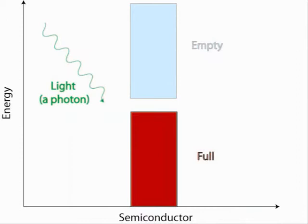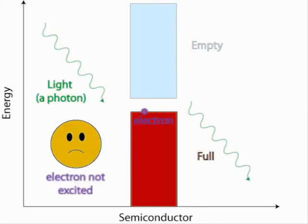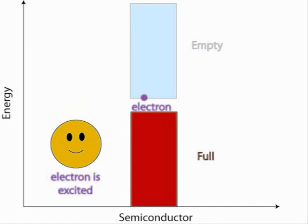For my research, I shine light onto my semiconductor. You can see the photon here. This light interacts with an electron and excites this electron to a higher energy. If the light does not have enough energy, then the electron does not become excited and therefore the light passes through my sample. Whereas if the light has enough energy, then it excites the electron up to the higher level and the photon is completely absorbed.